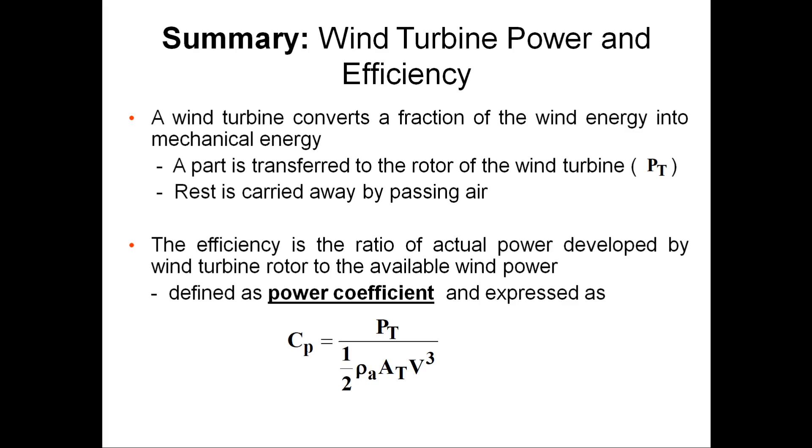This is the summary of today's session: power coefficient we have defined and what are the factors affecting the wind conversion. Today you are requested to note down the wind energy conversion derivation and Betz's limit. Find out how to derive and arrive at the Betz's limit. Write down in your notebook and email to me. That is the activity for today. Write down the major parameters affecting the wind energy conversion, derivation for wind energy developed, and Betz's limit.